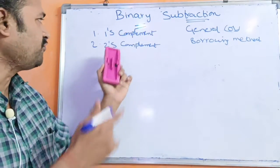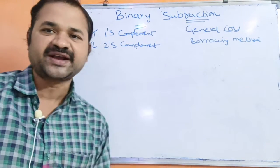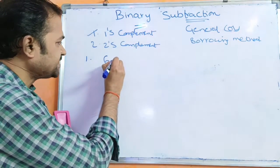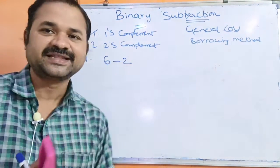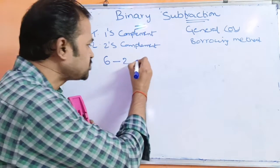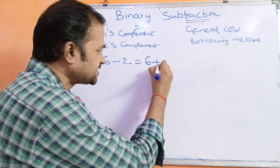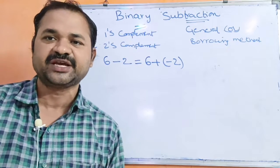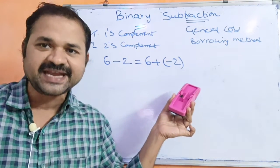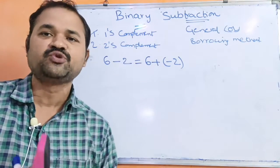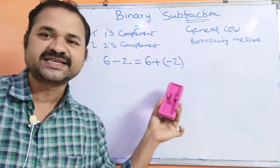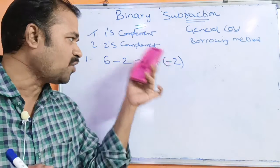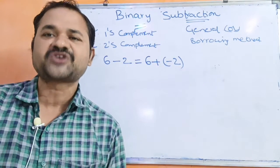First, let us see how we can do binary subtraction using one's complement. Let us take one example: 6 minus 2. We have to subtract these two binary numbers. Here 6 minus 2 is nothing but 6 plus minus 2. So subtraction means we will perform addition operation only, but in order to represent the second number, we may use either one's complement or two's complement. So we have to represent minus 2 in one's complement notation.